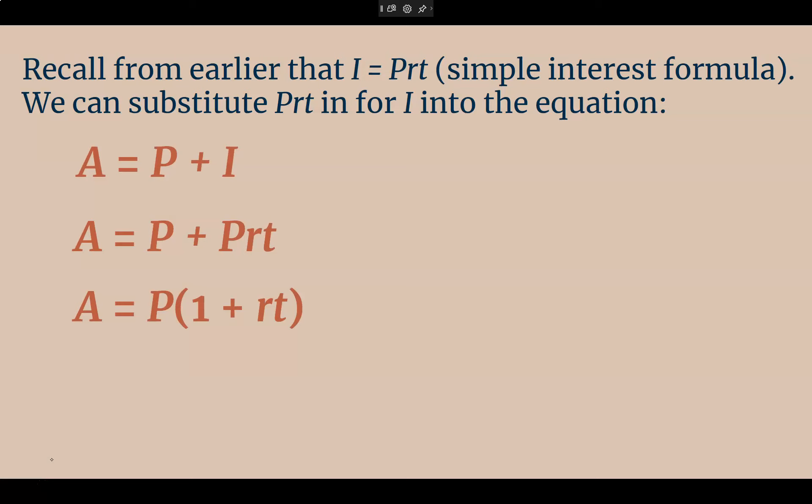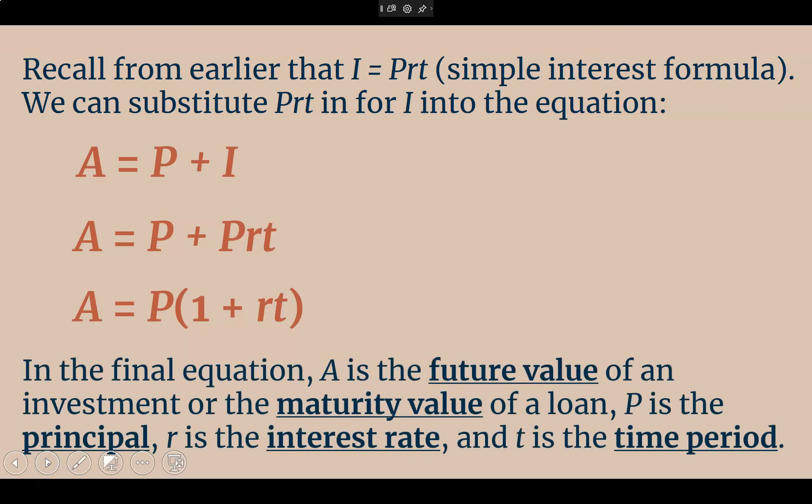So, in the process, you will add the interest. And then, you'll get your final amount. So, in our final equation, the A is going to be a future value if it's an investment, or it's going to be called a maturity value if it's a loan. The P is still the principal, R is still the interest rate, and T is still our time period. So, we treat all of these like we've been treating them.